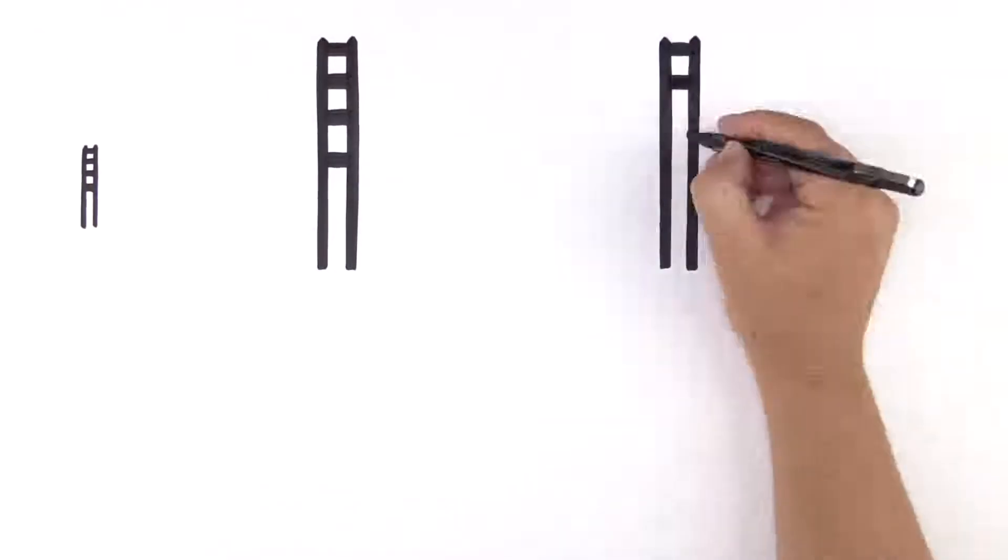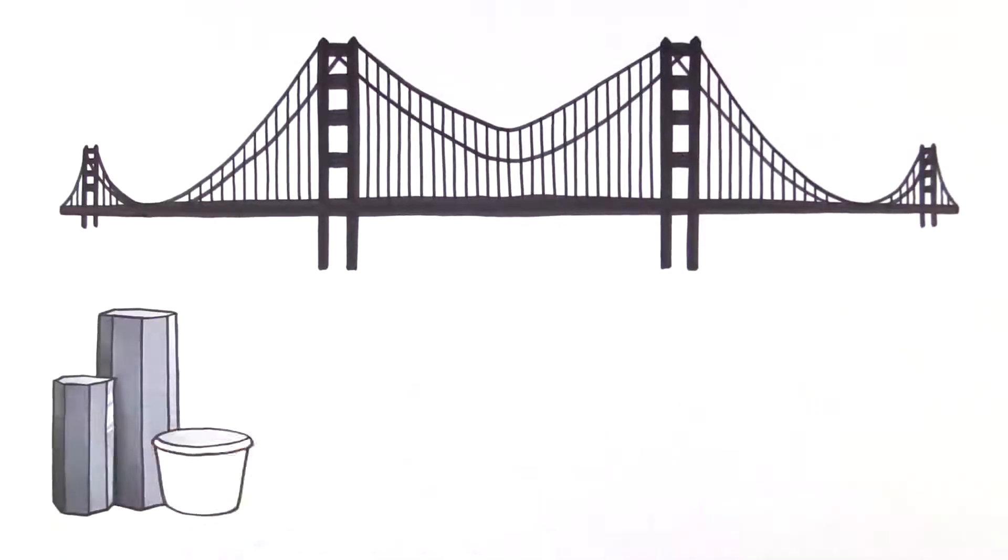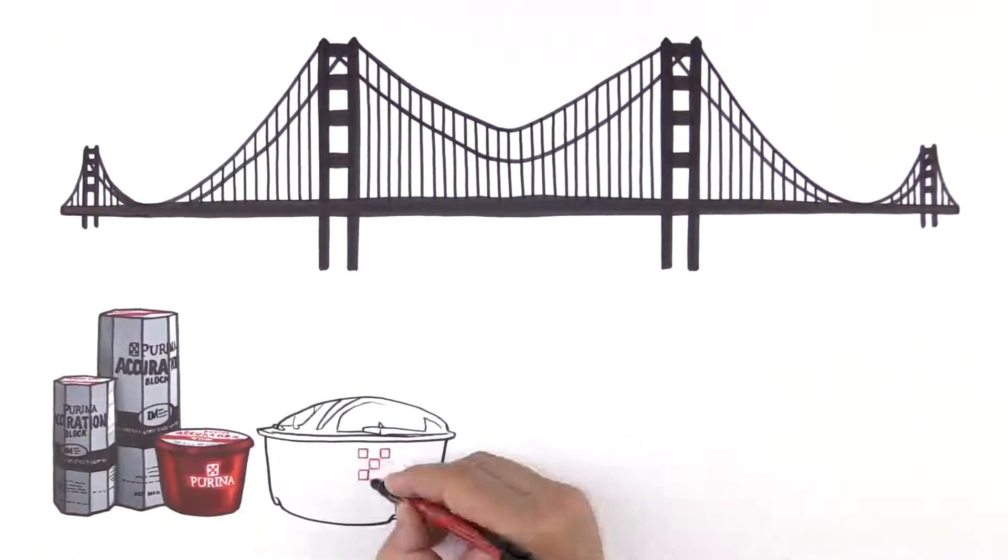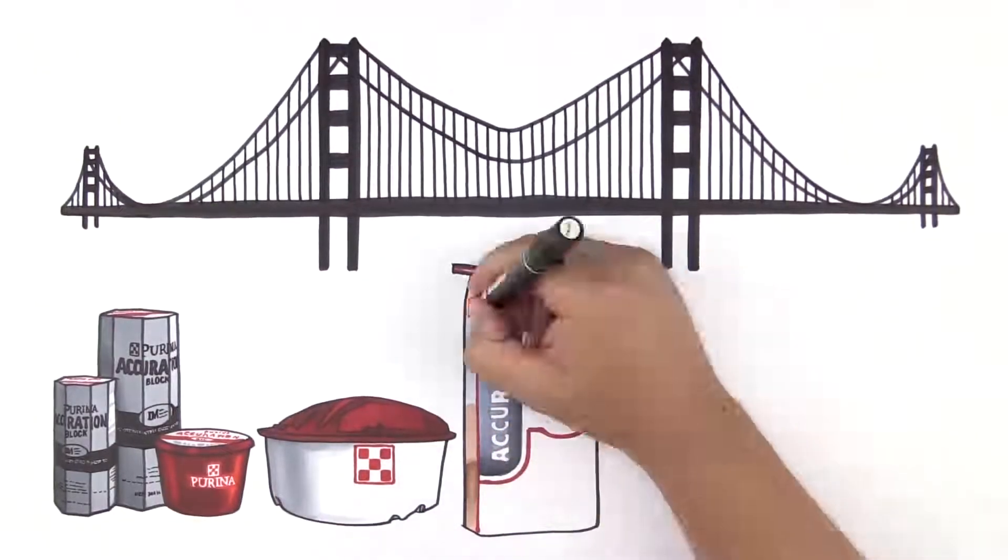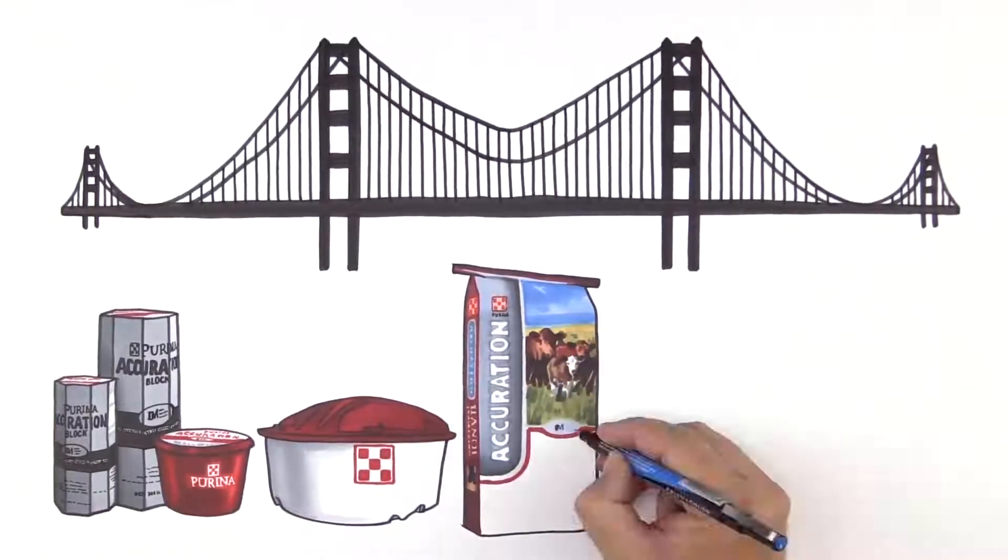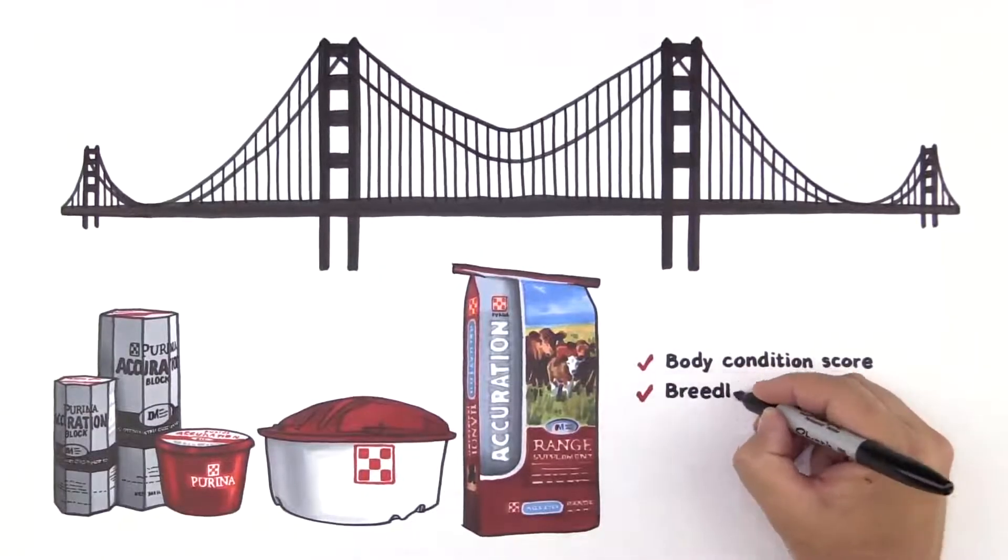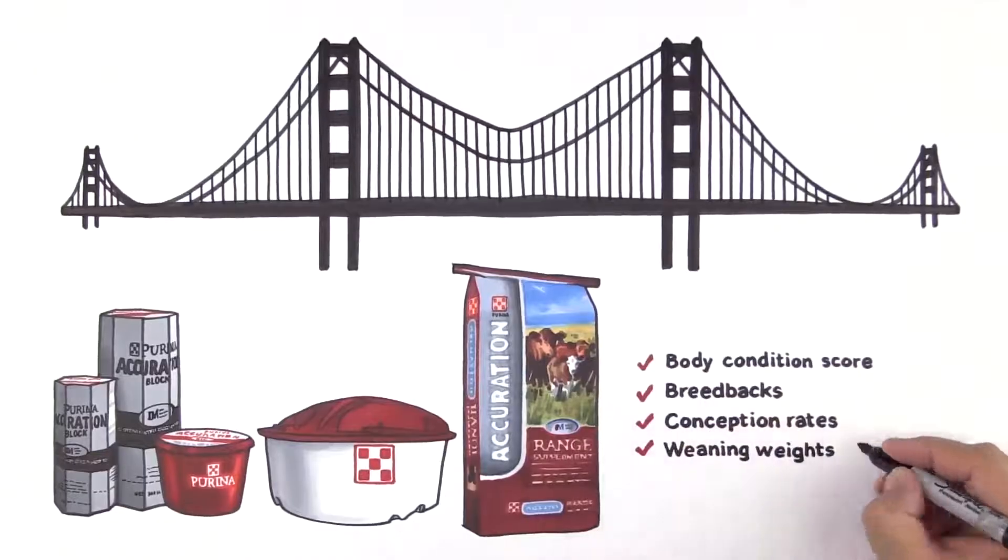One way to bridge the gap and provide the nutrients microbes need to flourish is providing your cows with Purina Accuration Supplement, available in block, tub, liquid, and meal forms. It helps provide the consistent nutrition needed to achieve a desirable rumen environment and maintain a consistent body condition score. A consistent body condition score can lead to cows breeding back quickly, optimized conception rates, and calf weaning weights.